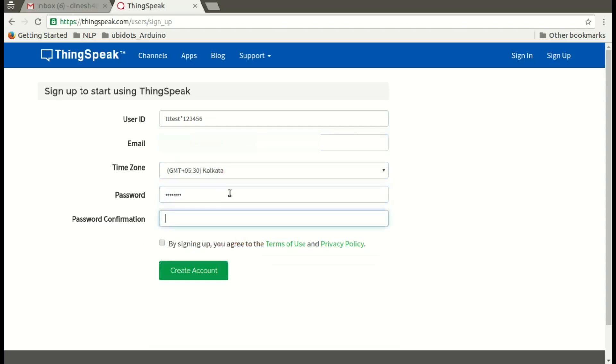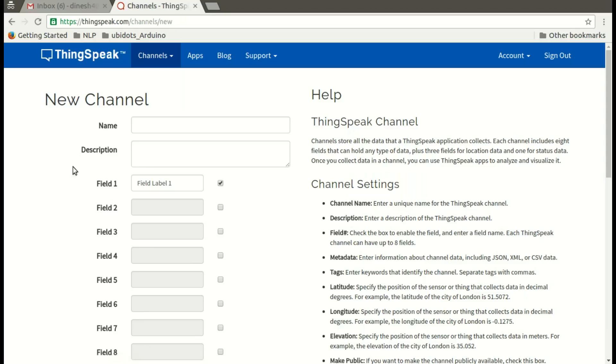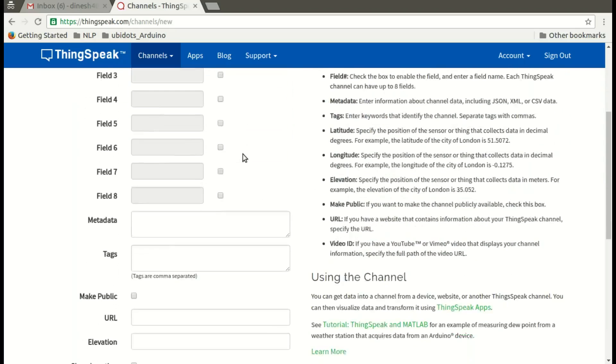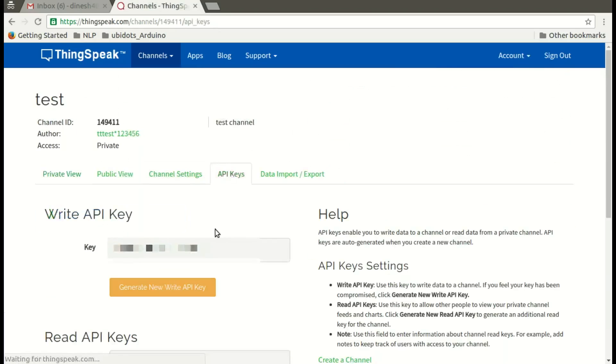Now click on new channel, give a proper name, enter some description, scroll down, click on save channel. Then click on API keys and note down your write API key.